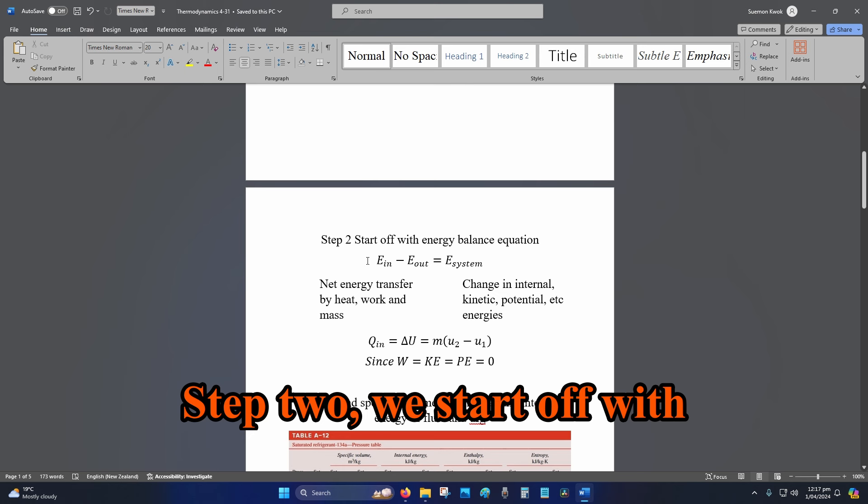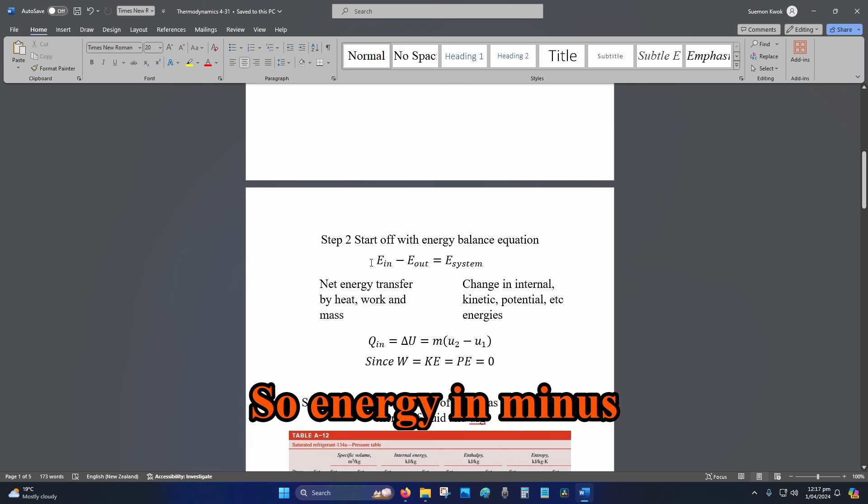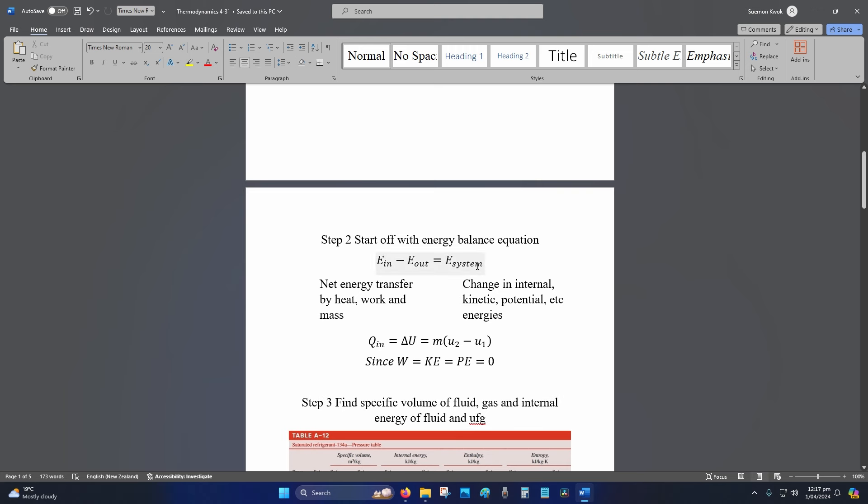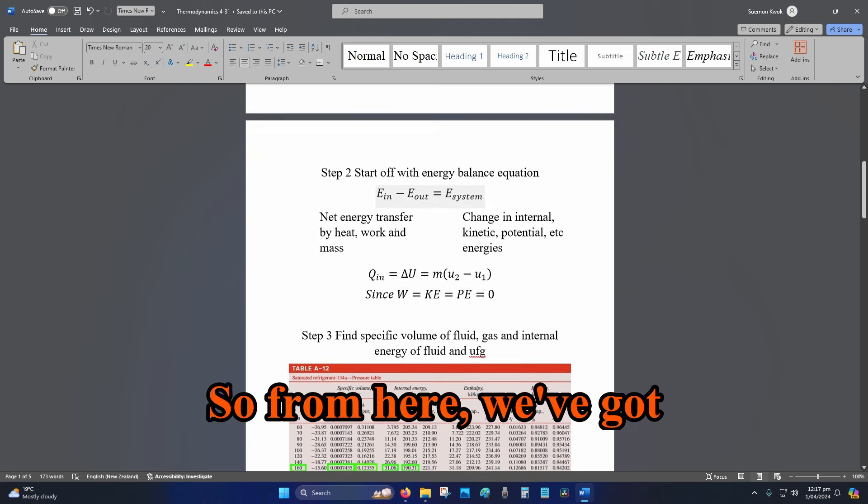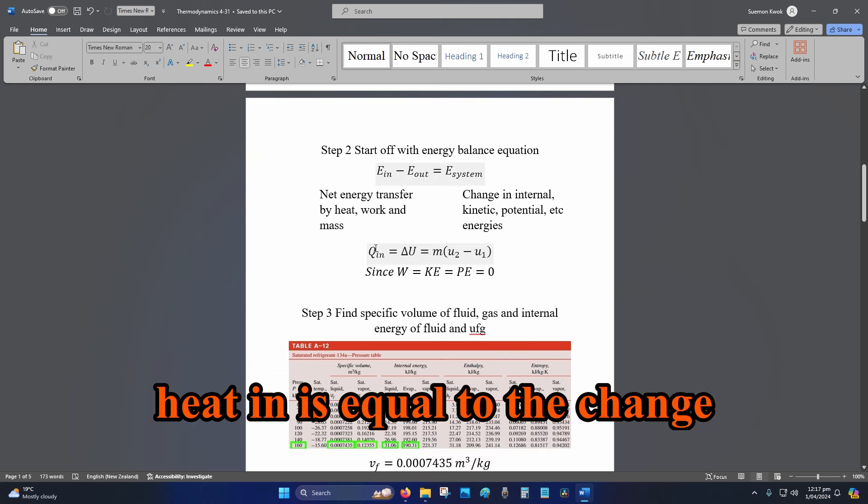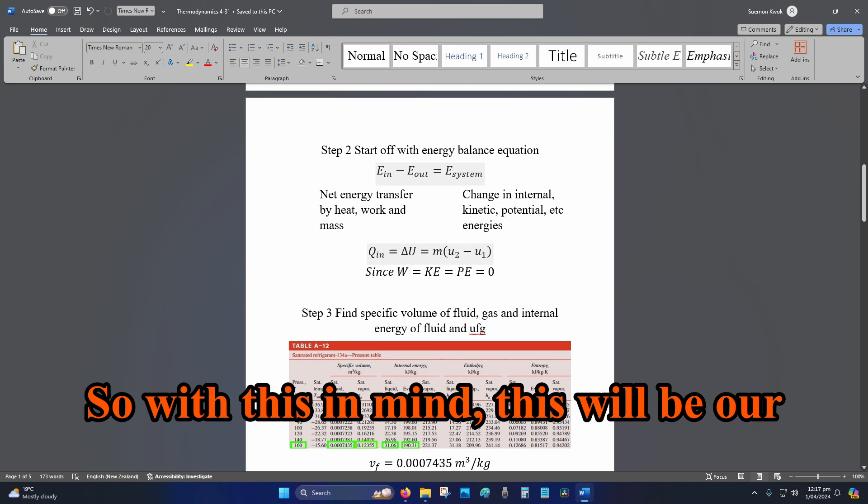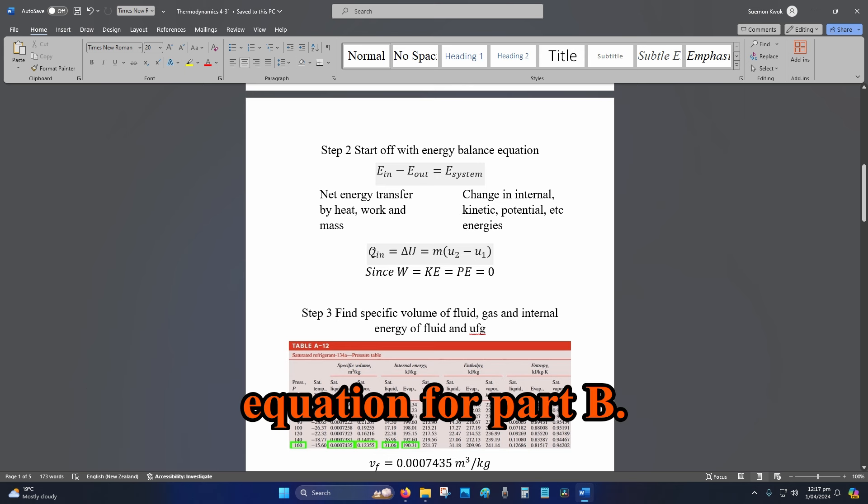Step 2: We start off with the energy balance equation. Energy in minus energy out equals energy of the system. From here, we've got Q_in equals the change in internal energy. With this in mind, this will be our equation for part B.